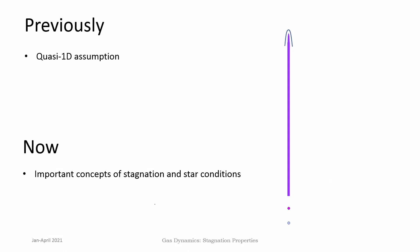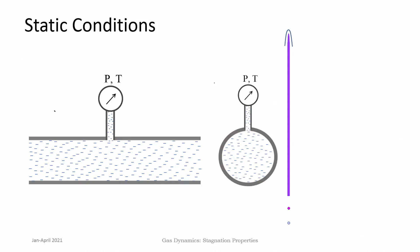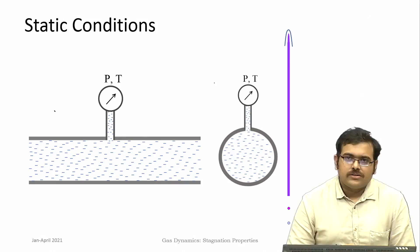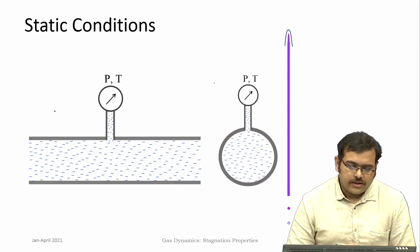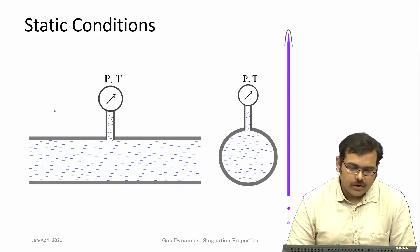Now we come to very important concepts of what are known as stagnation conditions and star or sonic conditions, and why they are important and where are their applications. First we will begin with stagnation conditions. The common principle for both of them is the static condition, and then you can reach the stagnation conditions or the sonic conditions through a certain hypothetical process.